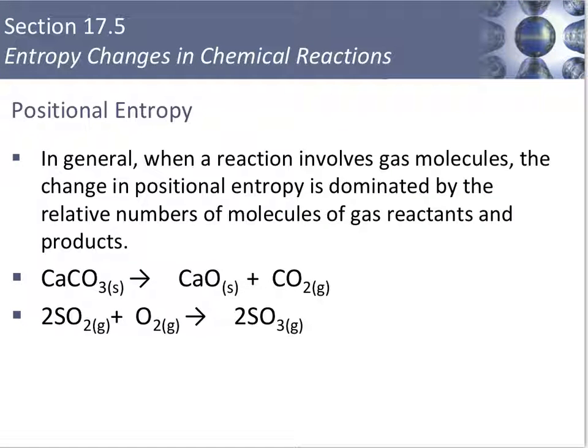Remember earlier in this chapter we discussed how gases have the highest positional entropy. The particles are the farthest apart of the three phases with more positions available. So when we're dealing with a chemical reaction that has gases, we're going to look at gas reactants versus gas products to see if we have an increase or a decrease in entropy.